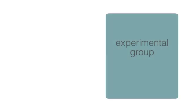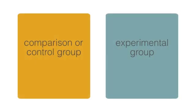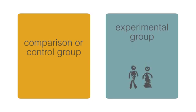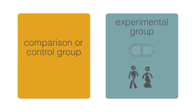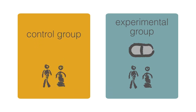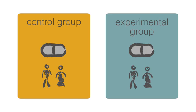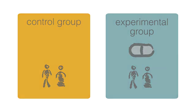In a research study there is usually an experimental group and a comparison or control group. Those in the experimental group will get whatever is being researched in the study. Those in a control group will usually get the standard treatment for the condition. If there is no standard treatment, those in the control group might get a placebo that looks the same but is not intended to have the same effect as the experimental treatment, or they might get nothing at all.